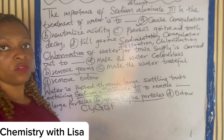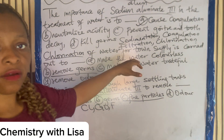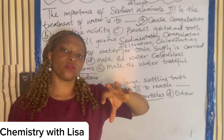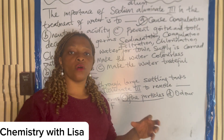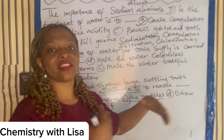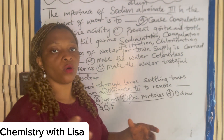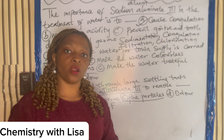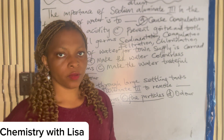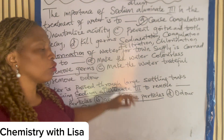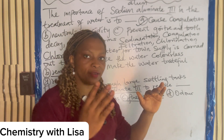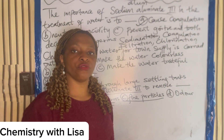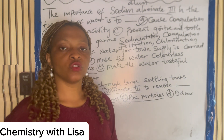Sedimentation is when particles are allowed to settle — you can remove large particles like refuse visible on the water. Coagulation is where you add alum to coagulate fine particles present in the water. Filtration is where you allow the water to pass through a sand bed to filter it. Chlorination is after filtration — you add a small amount of chlorine to kill the germs.